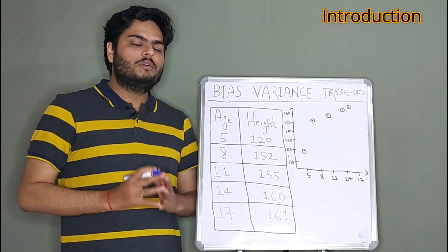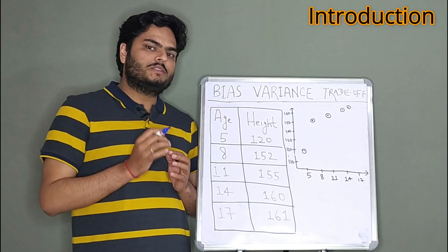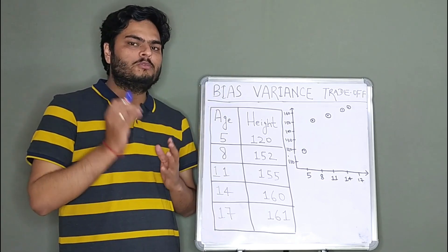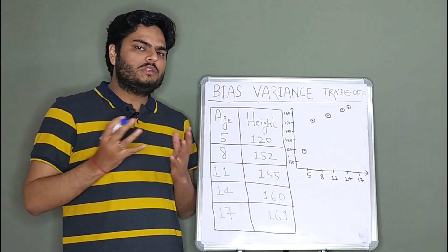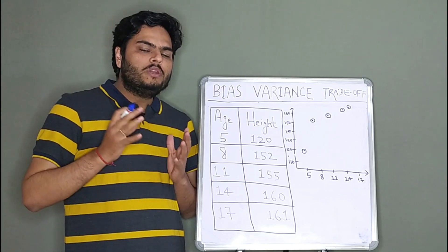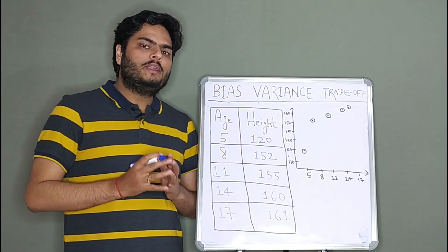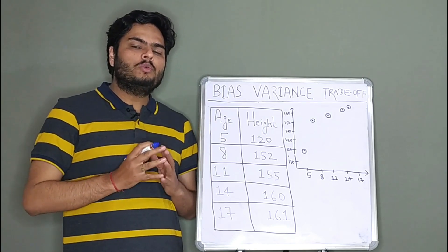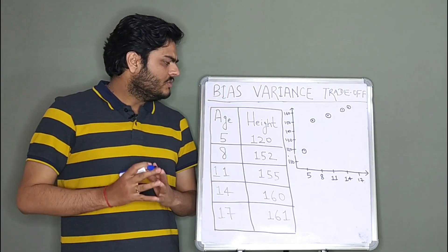Bias variance trade-off is one of the must-know concepts for every data scientist and one of the most famous interview questions for almost all data science interviewers. What is bias? What is variance? What is the meaning of bias-variance trade-off? If we know how a machine learning model works, can we tell if it will have high bias or high variance? We will answer all these questions with a simple dataset.